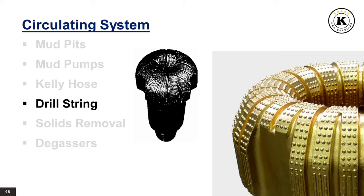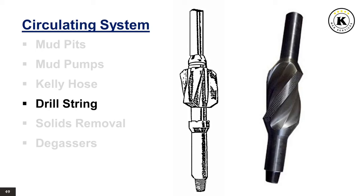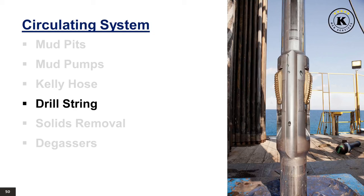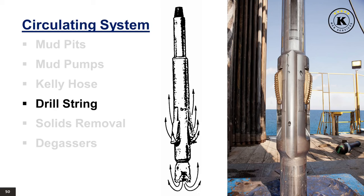Stabilizers are run between the drill collars and are of blade-type construction. Drilling fluid passes freely between the blades while the outer edges contact the wall of the hole, holding the drill collars firmly centered. They provide stability to the bit and collars, improving bit life and keeping the direction of the hole under control. Reamers usually have the same diameter as the bit and are run a short distance above it. As the bit wears and decreases in diameter, the reamer's function is to cut the hole out to full size behind the bit.